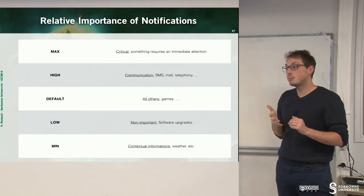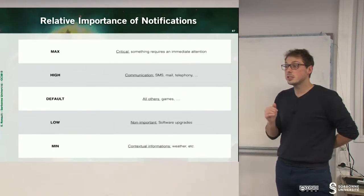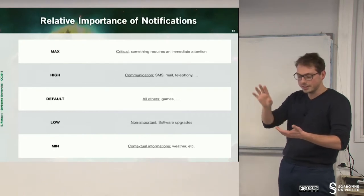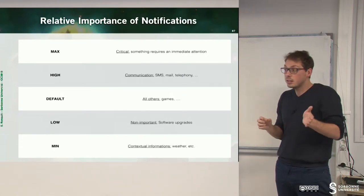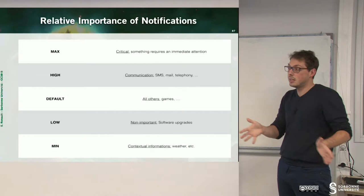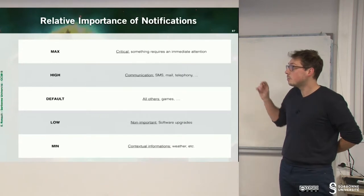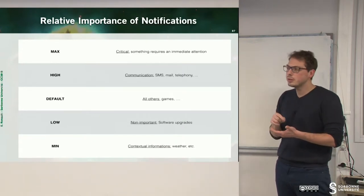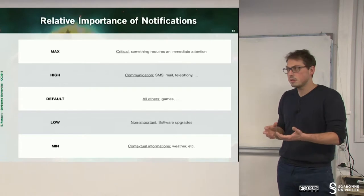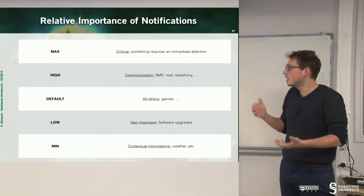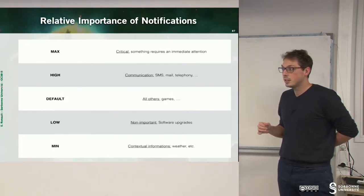You have five levels of priority. Max means something critical that requires immediate attention - for instance, the system has no more energy and needs to stop, so clean your mess. Otherwise, you have high importance, which means you receive an email, you receive a text, you receive something - which is communication. We consider that in a phone, communication is a high level of importance.